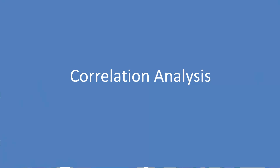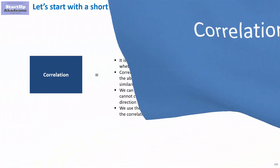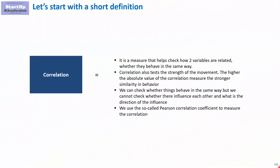Correlation analysis. Let's start with a short definition. Correlation is a measure that helps you define whether two variables behave in the same manner, so in a sense whether they are related.